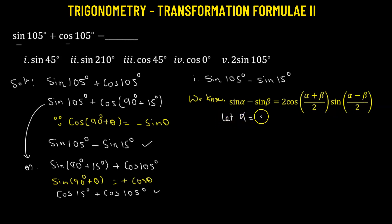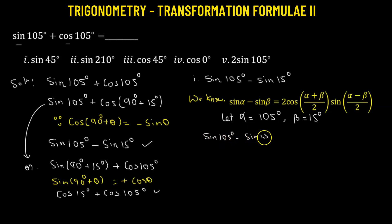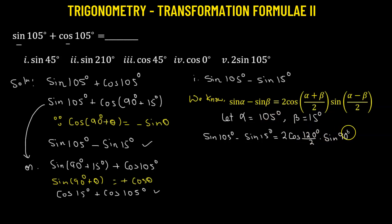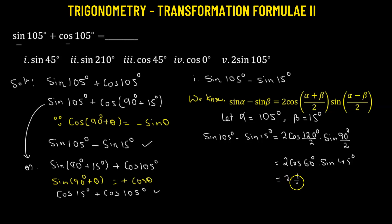Here we suppose alpha equals 105 degrees and beta equals 15 degrees. Substituting: sine 105° − sine 15° = 2 · cos((105+15)/2) · sin((105−15)/2) = 2 · cos(120/2) · sin(90/2) = 2 · cos 60° · sin 45°. We know cosine 60° equals one half, so we have 2 times one half times sine 45°. The two and two cancel, leaving us with sine 45 degrees.